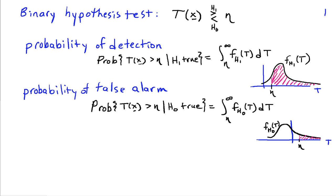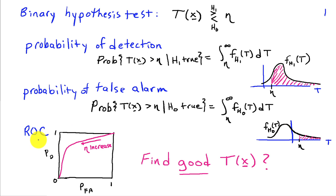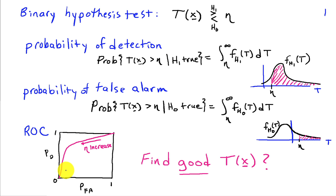We can put both of these together into something called a receiver operating characteristic, which shows how the probability of detection and the probability of false alarm vary with respect to changing the threshold eta. As eta increases, the probability of detection decreases, and the probability of false alarm also decreases. This brings us back to criteria for choosing a good test procedure T of X — our goal is to find a test procedure that has very good performance.